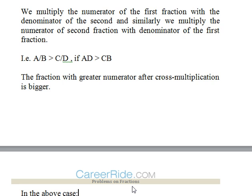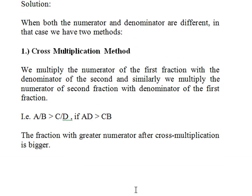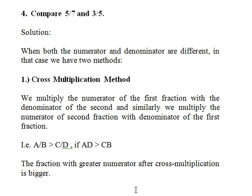Now question number 4. What we have to do here is compare 5/7 and 3/5. Now in this case both the fractions have different numerators and denominators, so it's a bit tricky. When both the numerator and denominator are different, we have two methods.